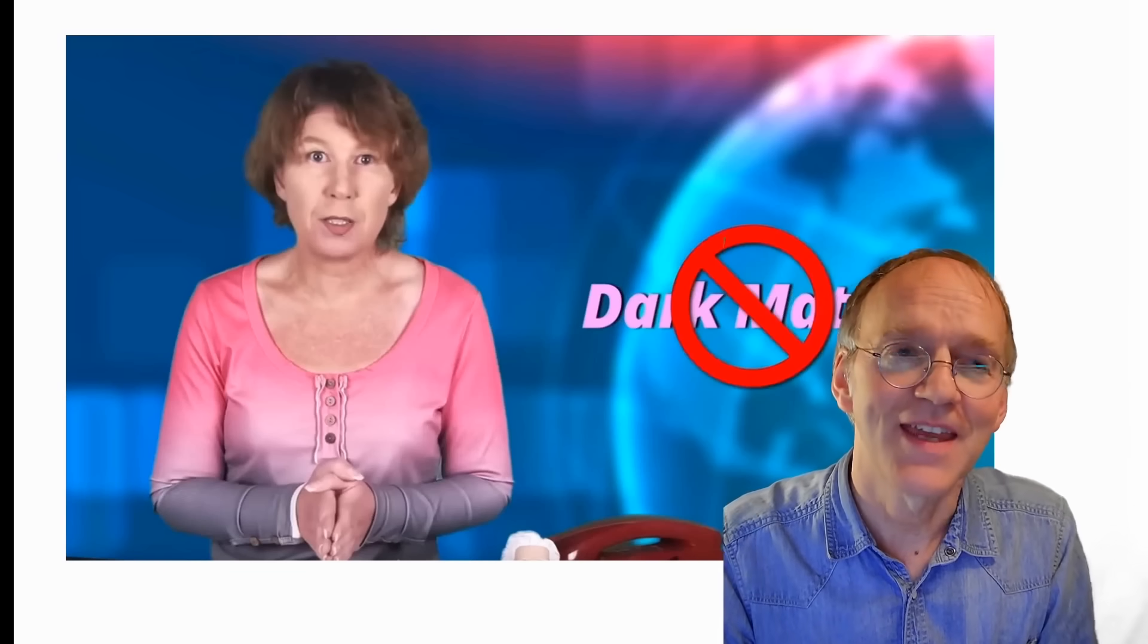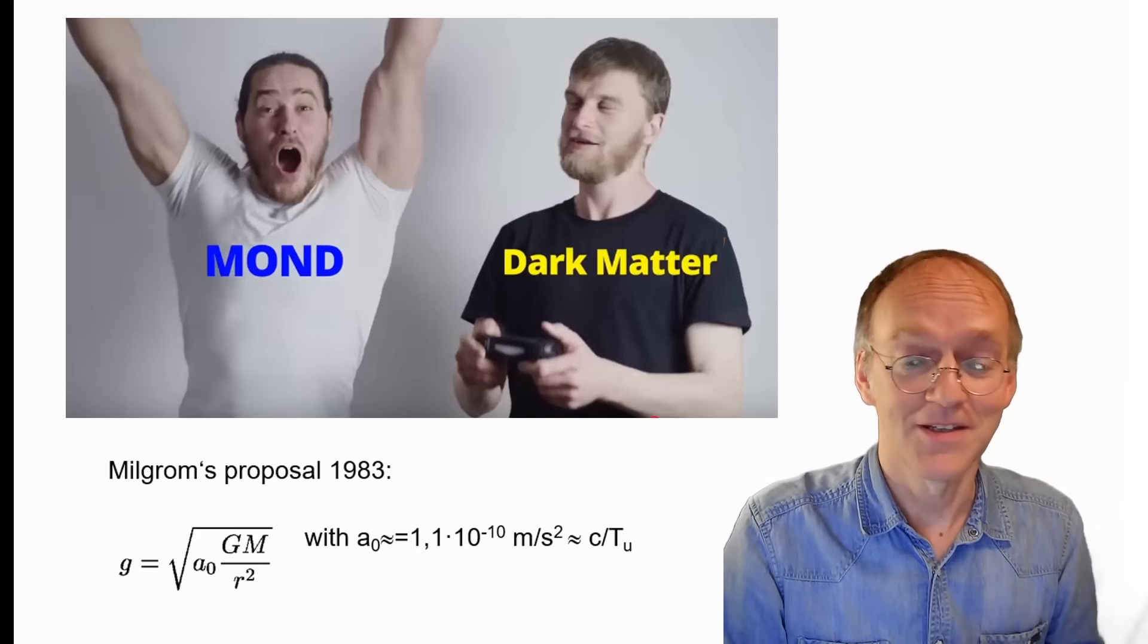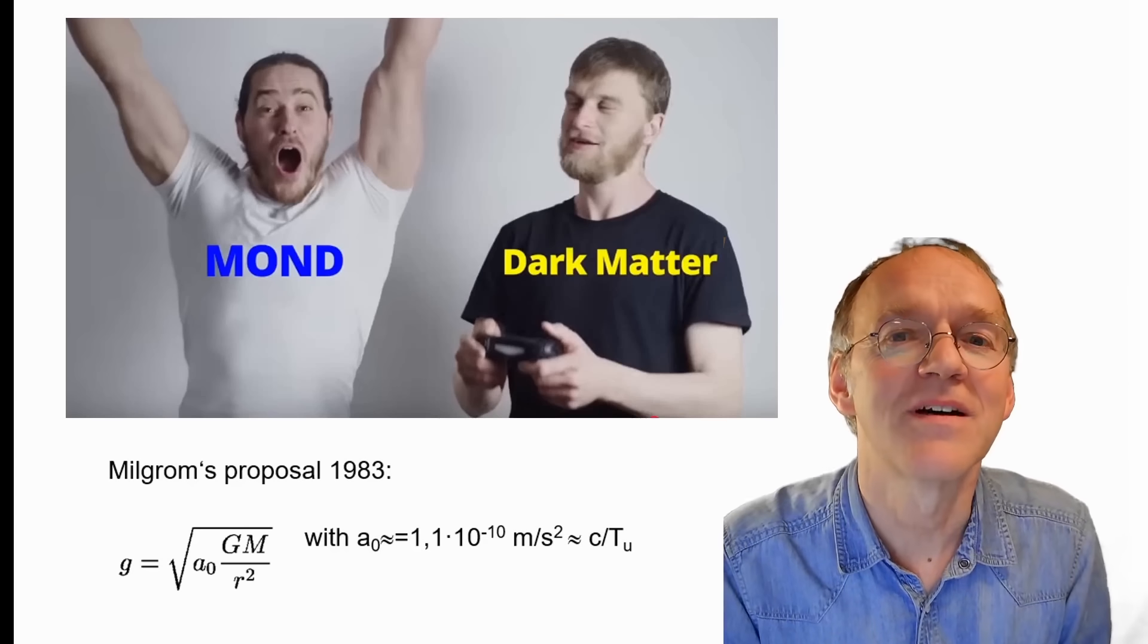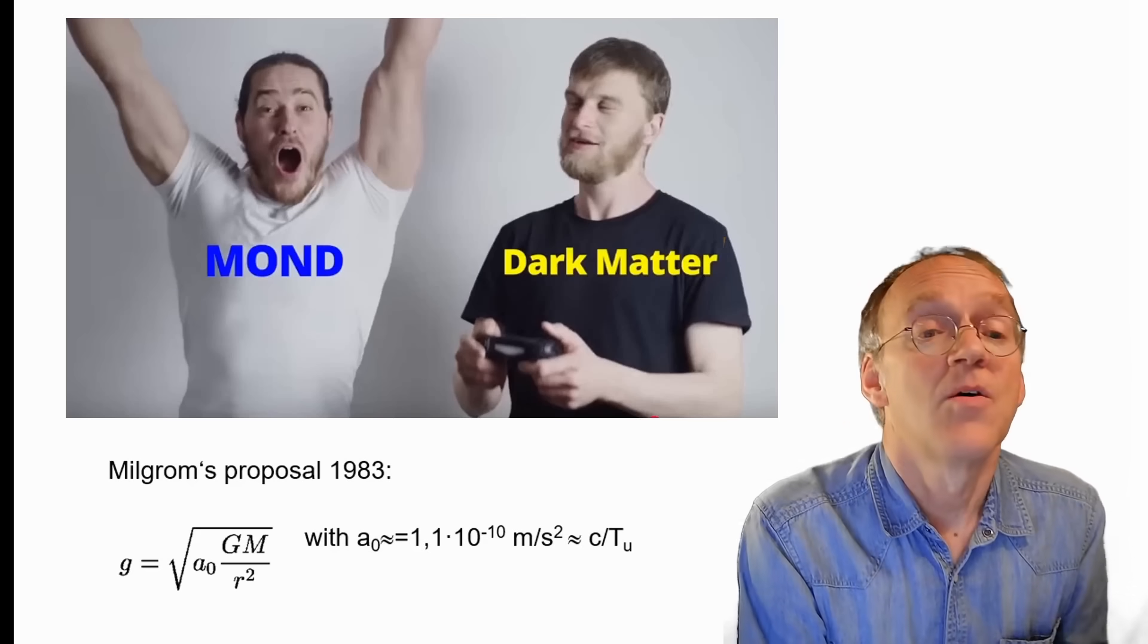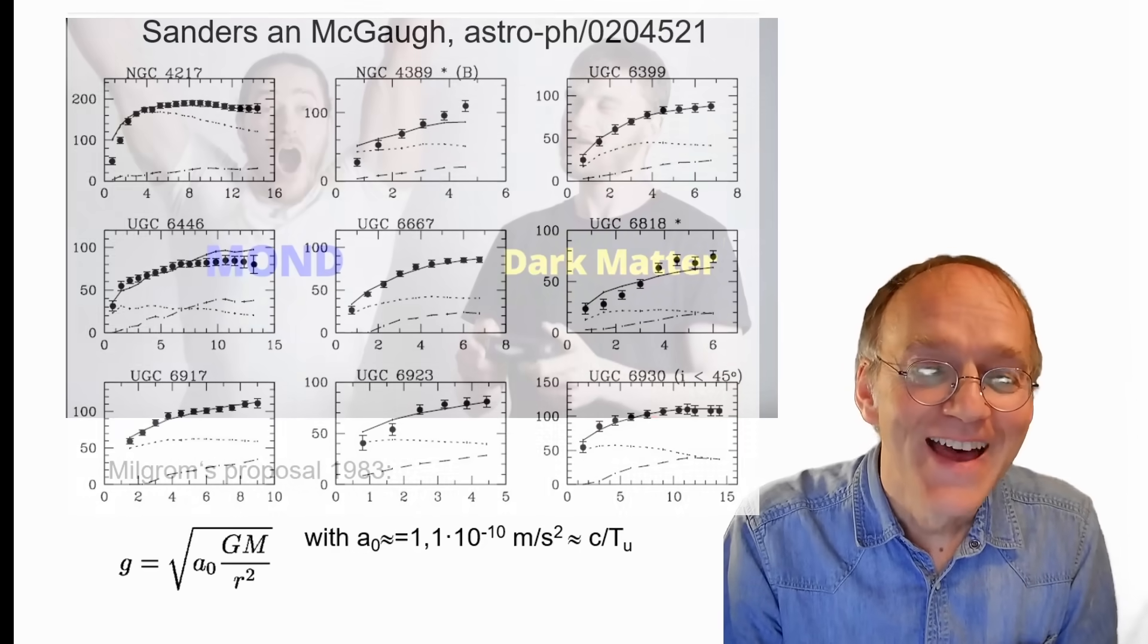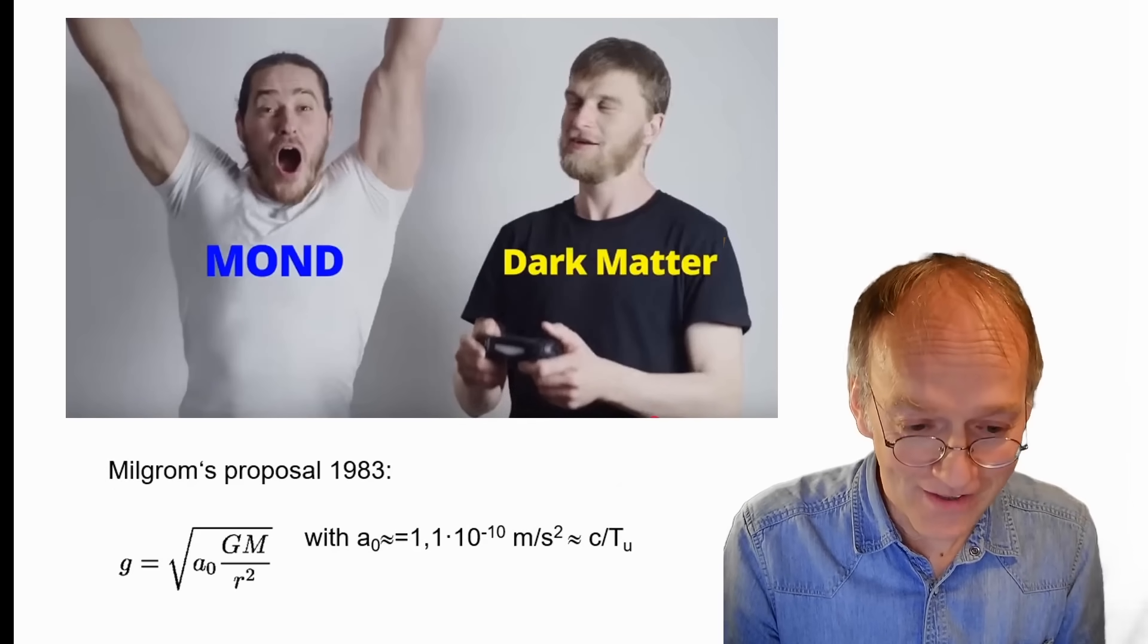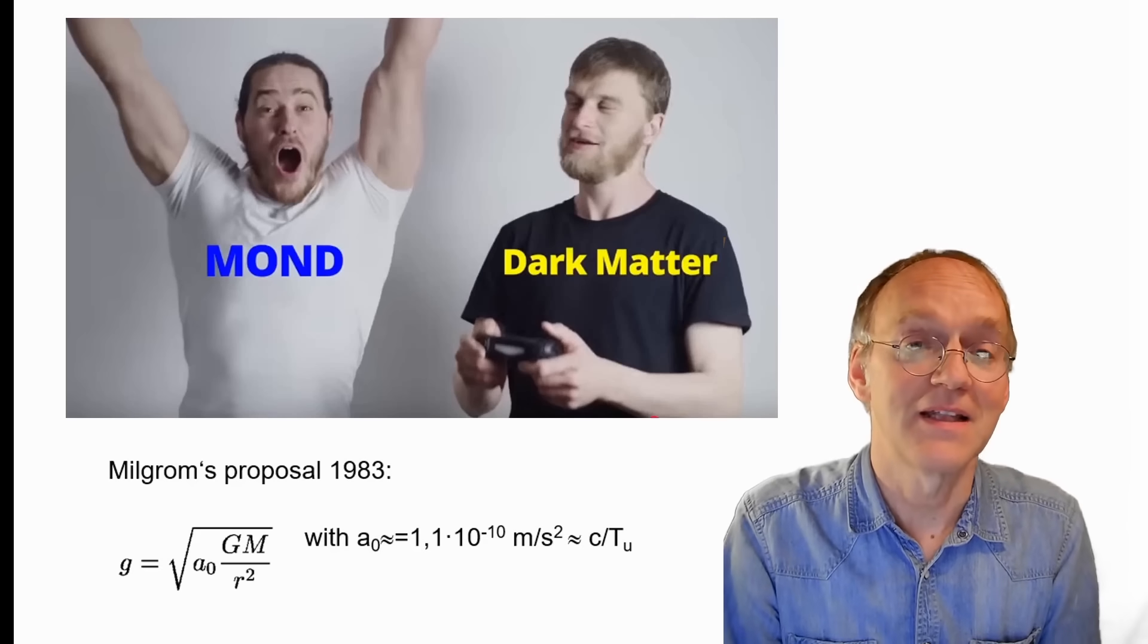Now Hossenfelder rightly continues saying that there is evidence against the dark matter model, but she somehow champions the alternative modified Newtonian dynamics and sees it as the winner in this debate. I kind of disagree here because if dark matter is falsified it doesn't mean that the alternative is verified. At the very end, it's not a theory because it's just a formula. You haven't the faintest idea how it is justified and what could be the possible fundamental implications.